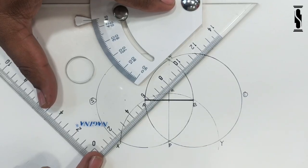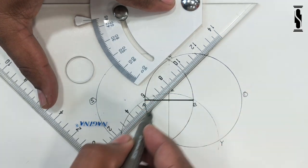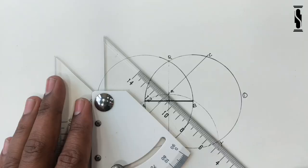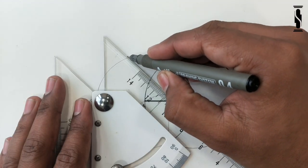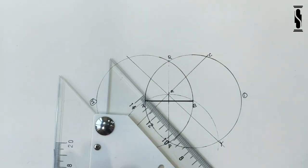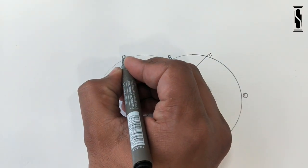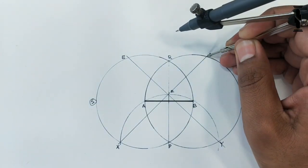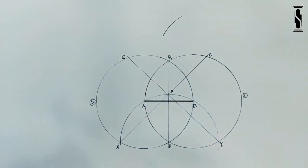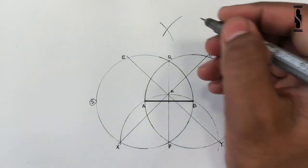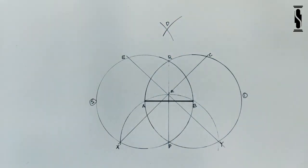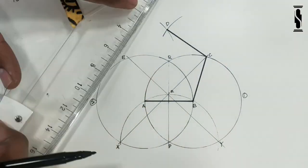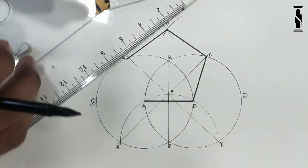Join points X and R and extend it to the circumference of the first circle; name the point of intersection as C. Join points Y and R and extend it to the circumference of the second circle; name the point of intersection as E. With center C and radius equal to AB, draw an arc. With center E and radius equal to AB, draw another arc, which will cut the previous arc on point D. Now join B to C, C to D, D to E, and E to A to complete the pentagon.